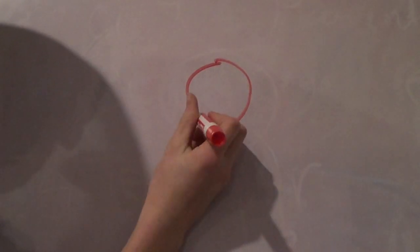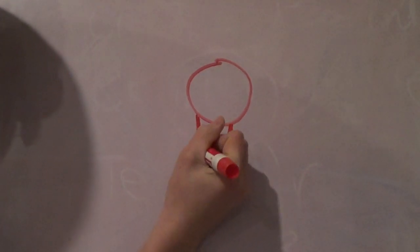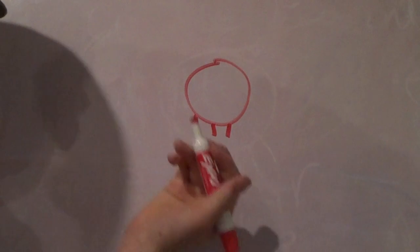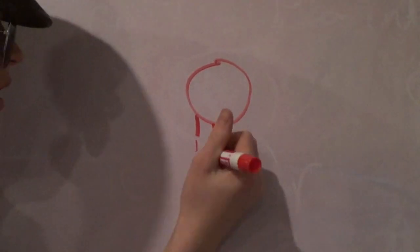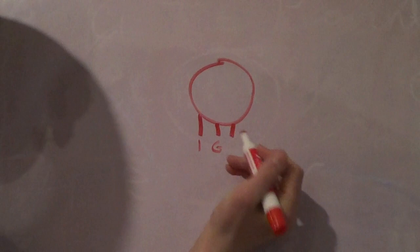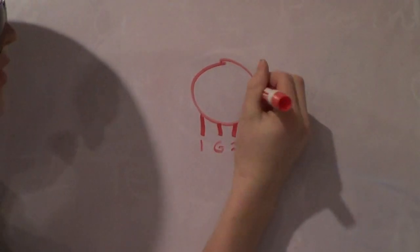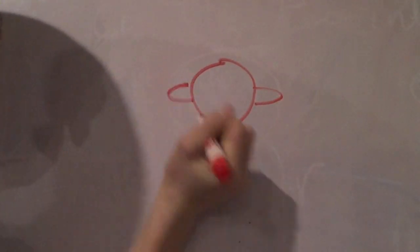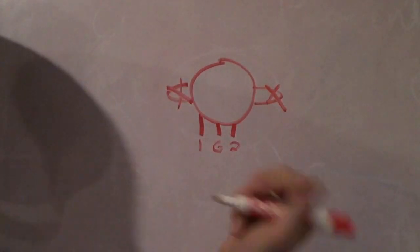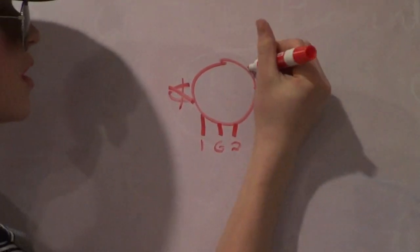So you have your potentiometer right here with three prongs. The first one goes to pin number one — it can be whatever. Then the middle one goes to ground and then this one goes to pin two. You'll notice the little prongs on the side; those are actually for structure, so don't worry about those. You can chop them off or whatever.